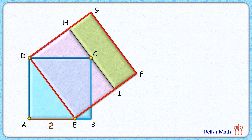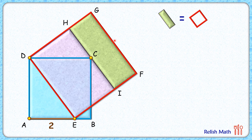Let's check this simple and elegant solution. We can easily see that the area of the green rectangle is nothing but the area of the full red square minus the area of the purple rectangle.